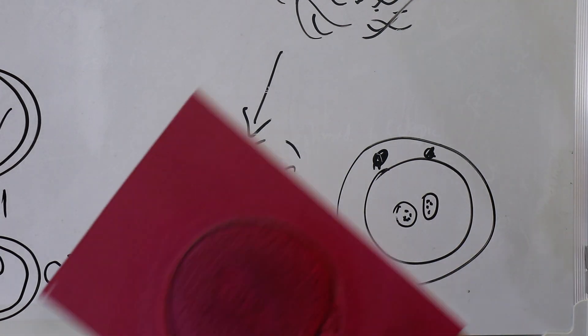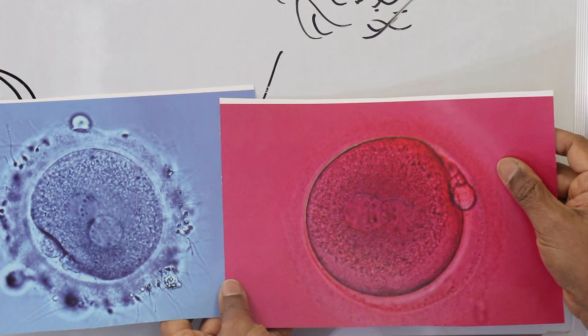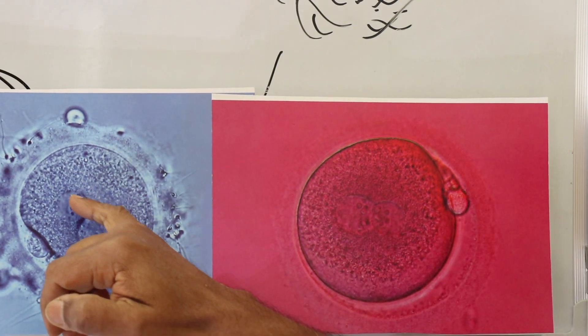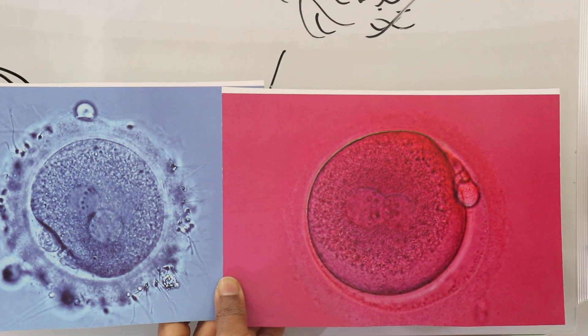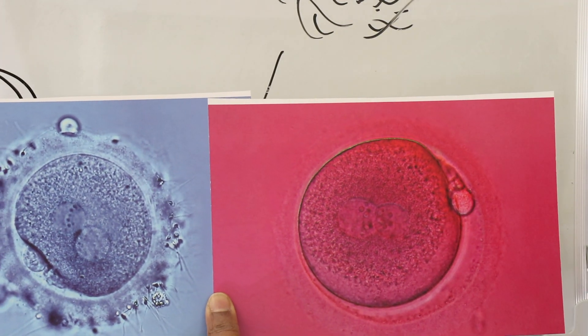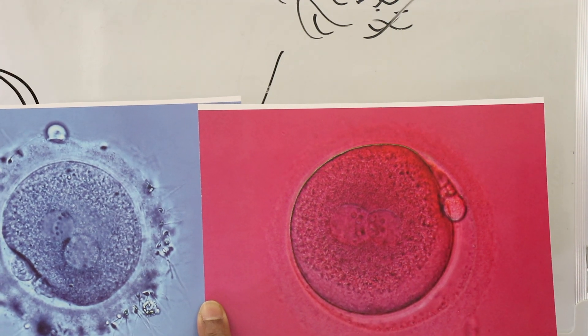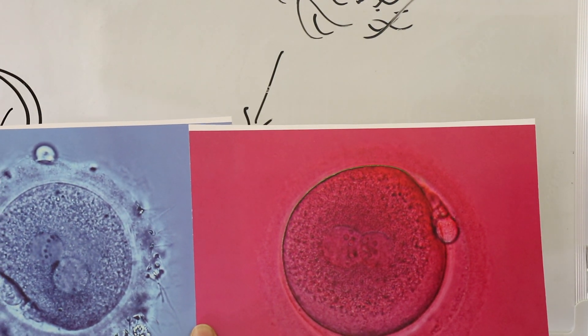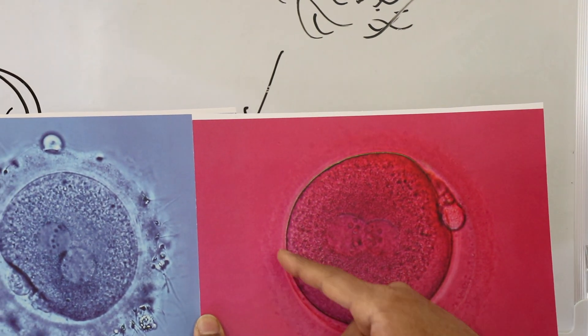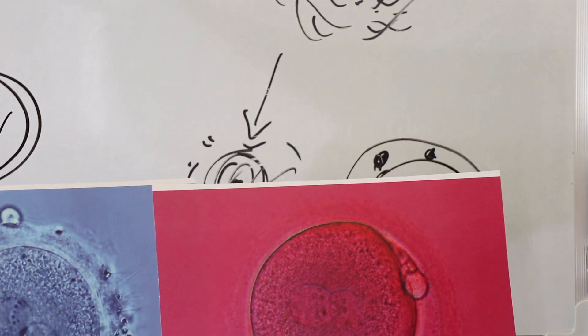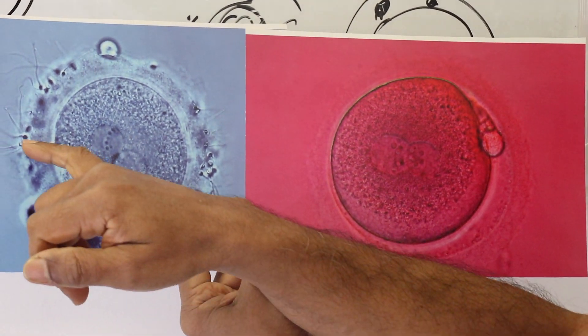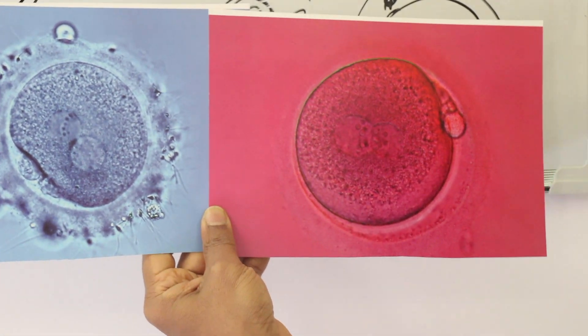If I show you these two pictures, both are fertilized. You can see two pronuclei and the polar bodies. But the difference is one is from IVF and one from ICSI. I'm sure you must have easily identified which is ICSI and which is IVF. This one is ICSI because you don't see a single sperm, as we have injected one sperm into the egg. That's from an IVF one because you can see several sperm still attached to the zona. So that is fertilization.